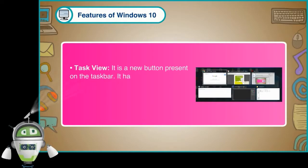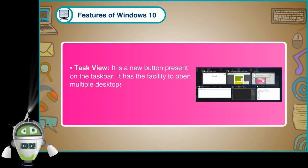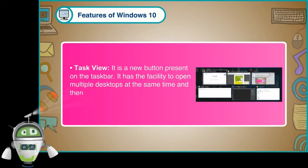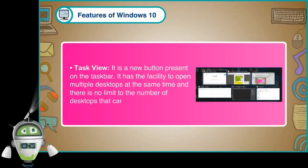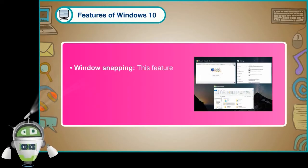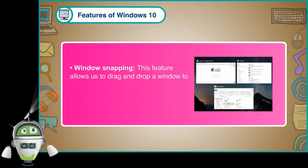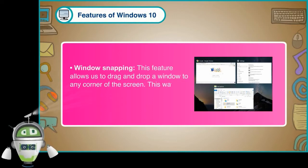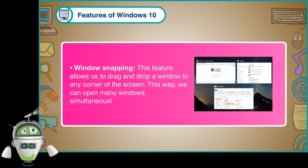Windows 10 has the facility to open multiple desktops at the same time and there is no limit to the number of desktops that can be opened. Window Snapping: This feature allows us to drag and drop a window to any corner of the screen. This way, we can open many windows simultaneously.